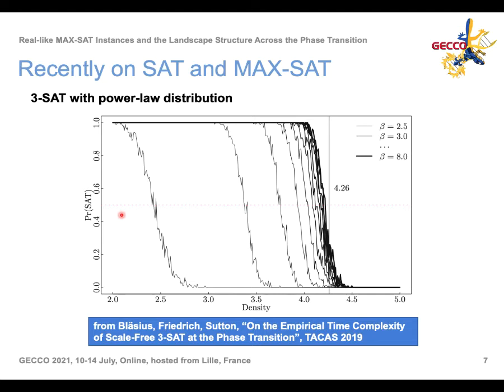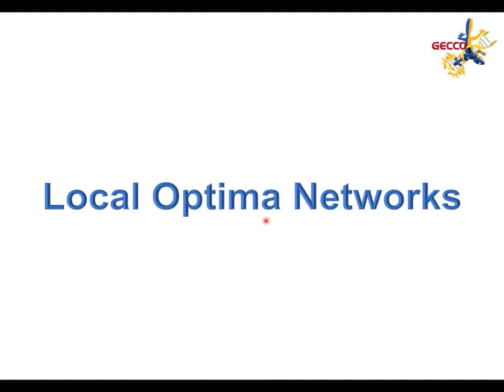We want to analyze in this work how the landscape features change in these instances following the power-law distribution. In particular, we wonder if this variation of the alpha threshold with beta can also be appreciated in the landscape features. To measure these landscape features, we use local optima networks.